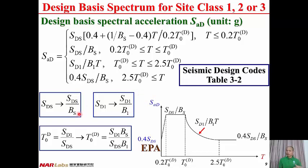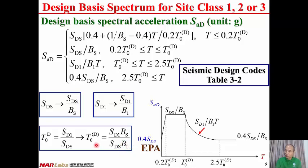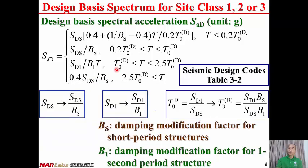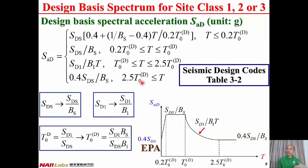When the structural damping ratio equals 5%, BS equals 1 and B1 equals 1. Therefore, there is no modification for SDS and no modification for SD1. Similarly, for T0(D), since BS equals 1 and B1 equals 1, there is no modification for T0(D). This equation reduces to the previous one for the damping ratio equal to 5%. Therefore, the damping ratio of 5% is just a special case for this general expression.